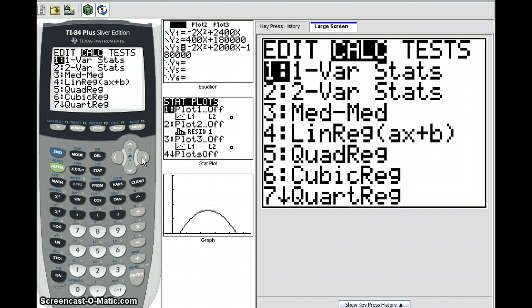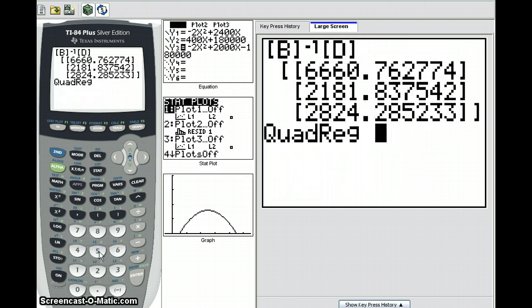For now, let's understand regression to mean the process of finding a curve to fit given points. In this case, we want to find a quadratic curve to fit the points we just entered. So we press 5 and press Enter.